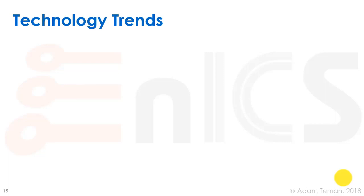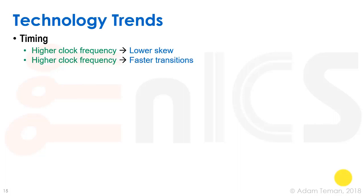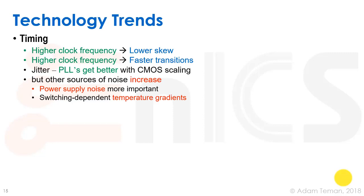A couple of technology trends come with advanced technology. When we look at timing, we're always trying to get higher clock frequencies, which means we want lower skew to meet max and min delays. Higher clock frequency also brings faster transitions. PLLs have gotten better with CMOS scaling, which is good, but we have other sources of noise that increase — power supply noise is more important because we have lower voltages, and we have switching-dependent temperature gradients.